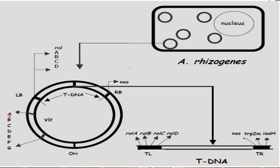The RI plasmid consists of VIR genes A, B, C, D, E, F, and G. VIR A recognizes plant metabolites and activates VIR G, which is a transcriptional activator of other VIR loci. VIR D nicks the RI plasmid at the T-DNA border and covalently attaches to the T-strand, whereas VIR C is involved in host range determination. VIR E acts as a single-stranded DNA binding protein and VIR B acts as a transfer operator.